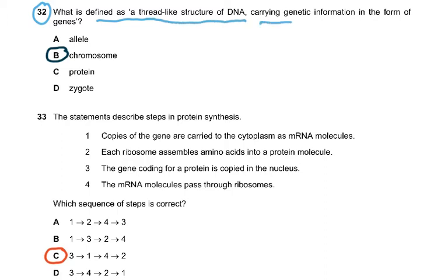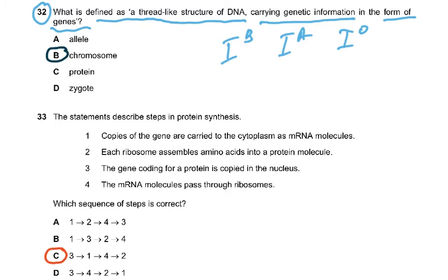Question 32: what is defined as a thread-like structure of DNA carrying genetic information in the form of genes? The answer is chromosome. An allele is an alternative form of a gene — for example, blood group alleles IA, IB, and IO. A protein is not a thread-like DNA structure, and a zygote is the cell formed when sperm and ovum fuse in sexual reproduction.